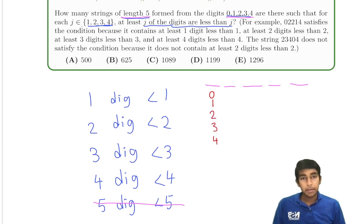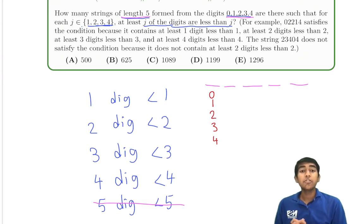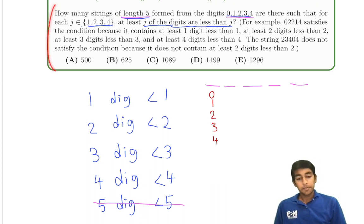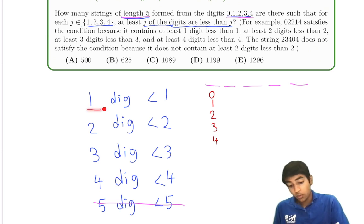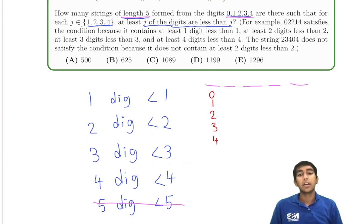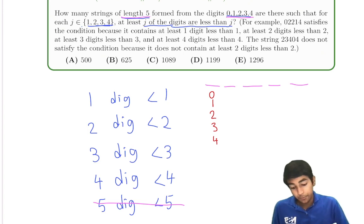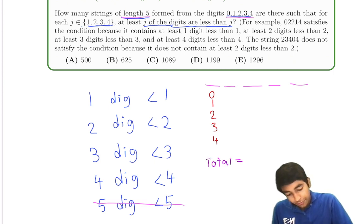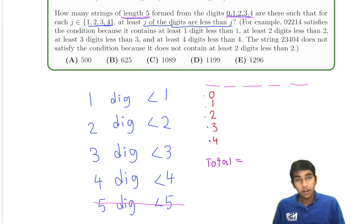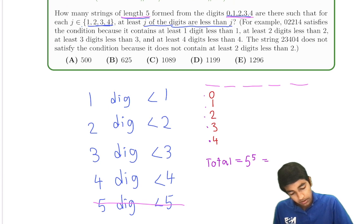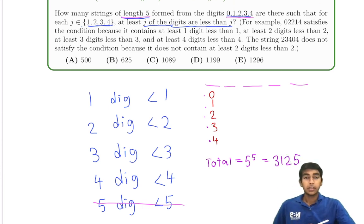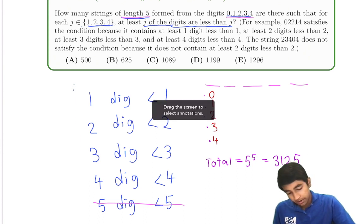How do we approach this problem? It seems like there are many cases to consider, so we'll use complementary counting. Instead of counting the valid arrangements directly, we find the number of strings where at least one condition fails. The total number of possible strings is 5 choices per digit over 5 digits: 5^5 = 3125.